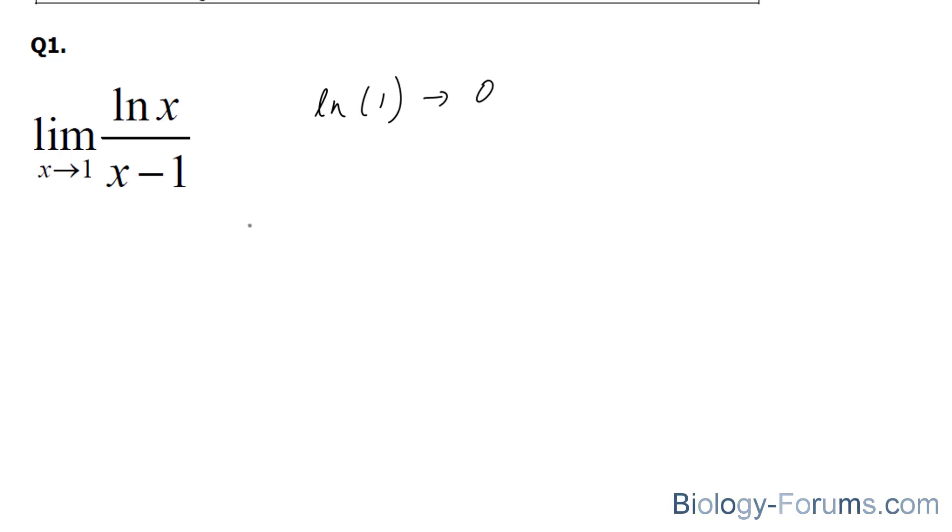The derivative of ln x is equal to 1 over x, and I do have a video dedicated on how to find the derivatives of ln. And similarly, the derivative of this function is simply equal to 1. If we simplify this, we end up with 1 over x. And if we were to evaluate the limit as x approaches 1 for 1 over x, we simply get 1.